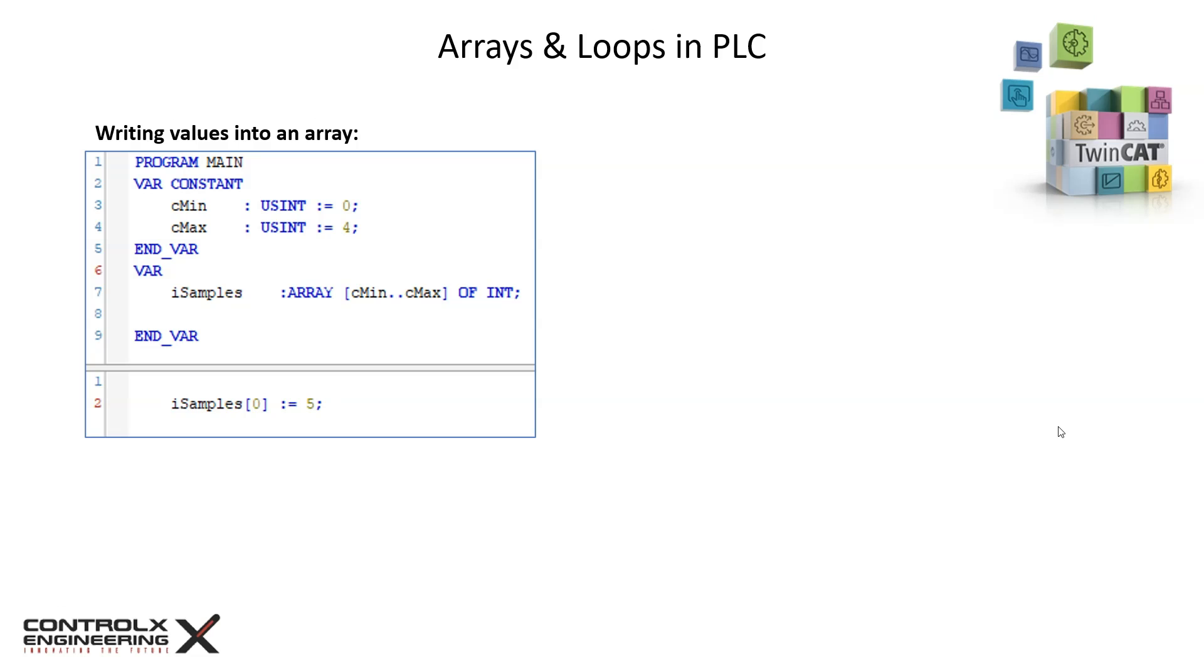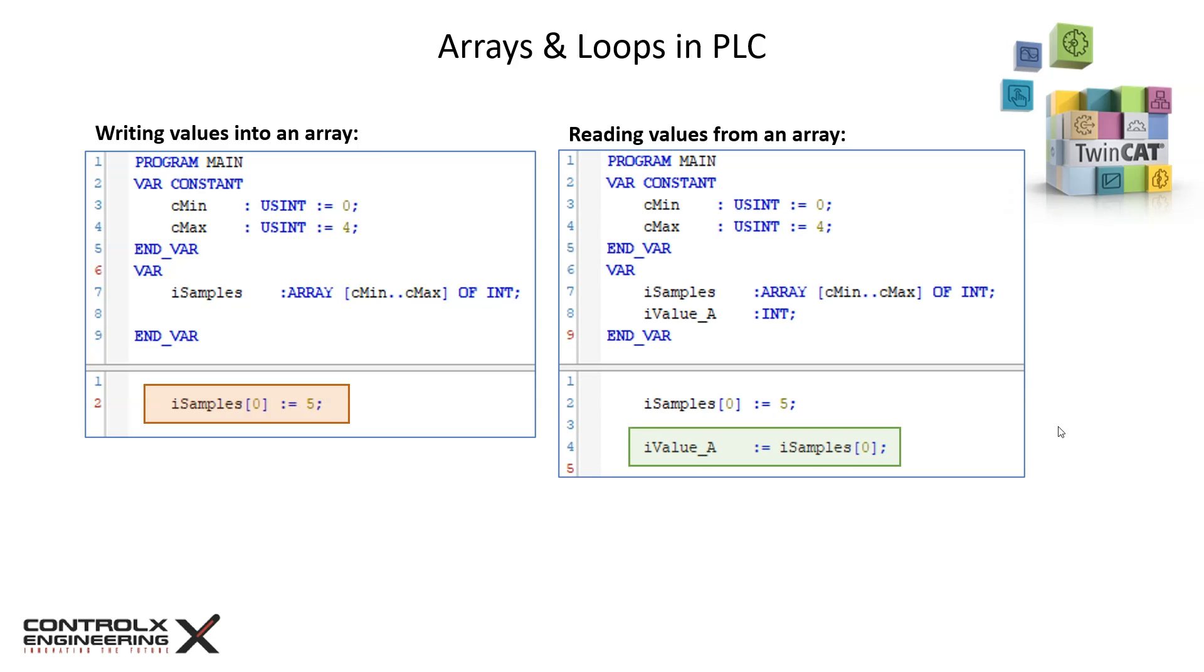Values can be assigned to the elements of your array by using the index number. In the example shown, I'm assigning a value of 5 to the first element of the array at index 0.